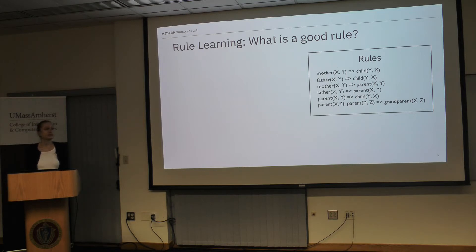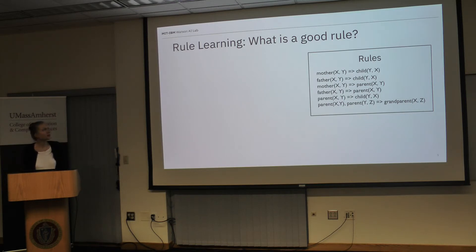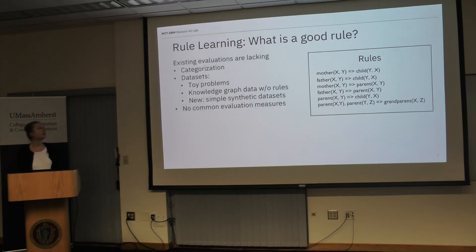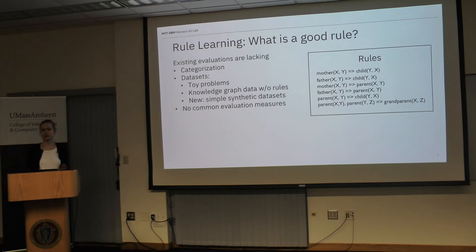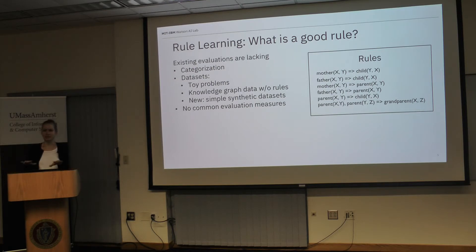There are very many dimensions we haven't considered yet. For instance, over current knowledge bases you could easily learn a rule like 'every person who is a CEO is male' — we definitely don't want such rules. I won't answer the question of what is a good rule today, but we want to overcome some of the issues with existing evaluations. Datasets are usually categorized by the number of different predicates and constant symbols, but that's probably not enough. A knowledge graph like WordNet, which represents a dictionary, could have the same number of entities as a social network, but the structure, patterns, and data might be very different.